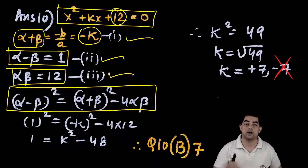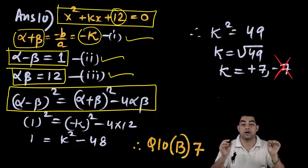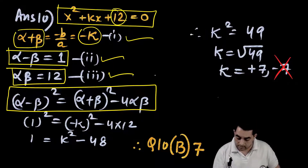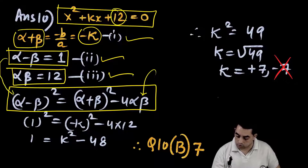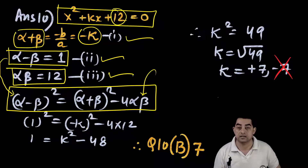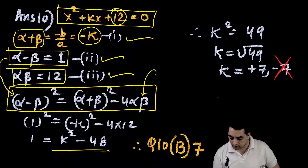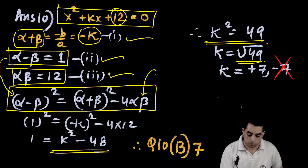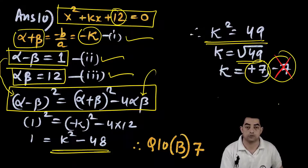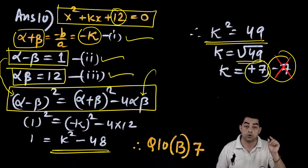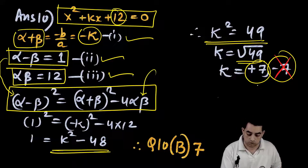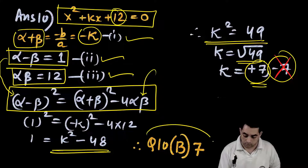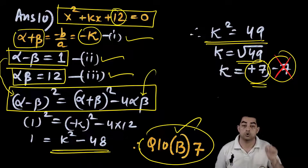Substituting: 1² = (-k)² - 4(12) → 1 = k² - 48 → k² = 49 → k = ±7. Since the question asks for the positive value of k, the answer is k = 7. Correct answer: option B: 7.